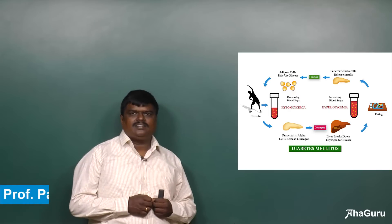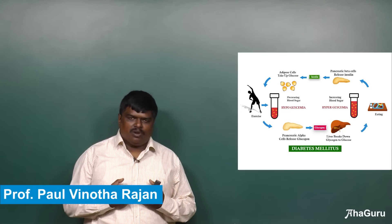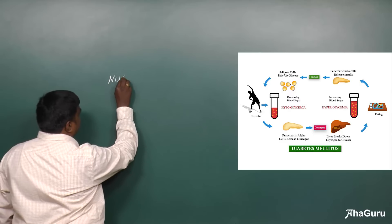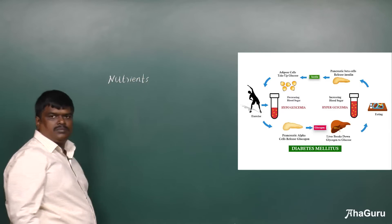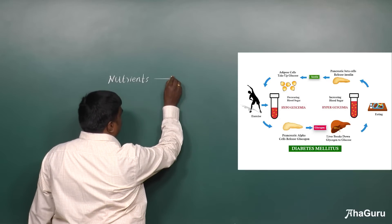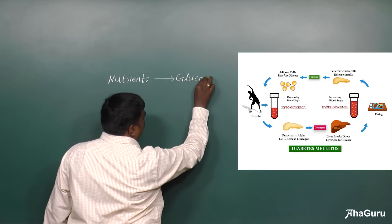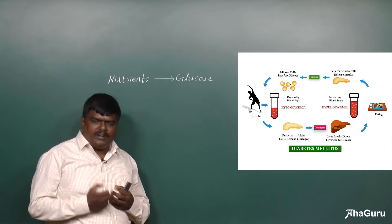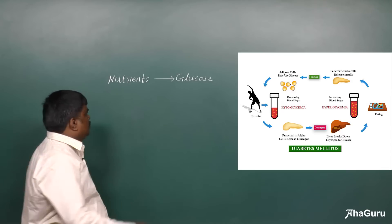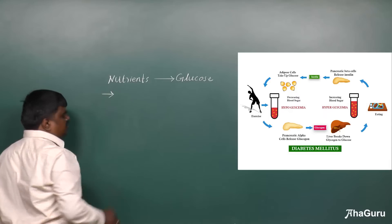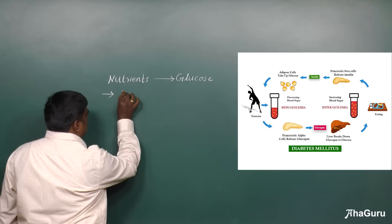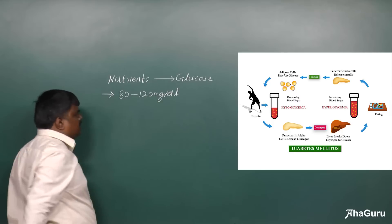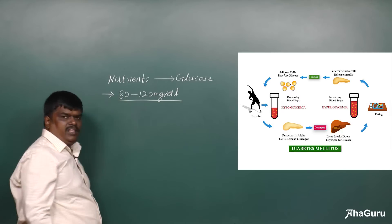Dear children, welcome to today's class. We are going to talk about glucose metabolism in our body. The food what we eat contains different types of nutrients in it. These nutrients are mostly converted in our body in the form of glucose. This glucose will be retained in the blood for quite some time. The normal level of glucose in our body is 80 to 120 mg per deciliter of blood. This is the normal blood glucose range in our body.